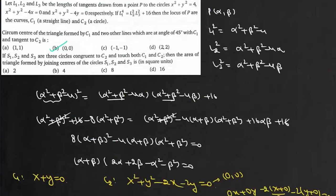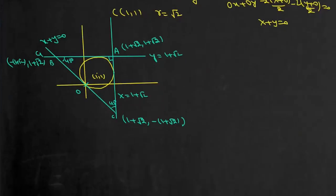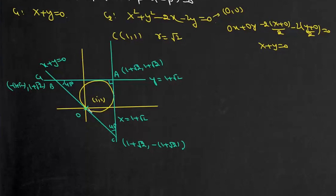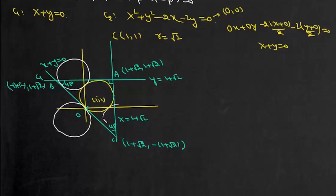The second sub-question: S1, S2, S3 are three circles congruent to C2 that each touch both C1 and C2. Find the area of the triangle formed by joining the centers of S1, S2, S3. Each of these circles has the same radius as C2, which is √2. One circle is drawn on one side, a second on the other side of C1, and the third symmetrically, with centers S1, S2, S3.